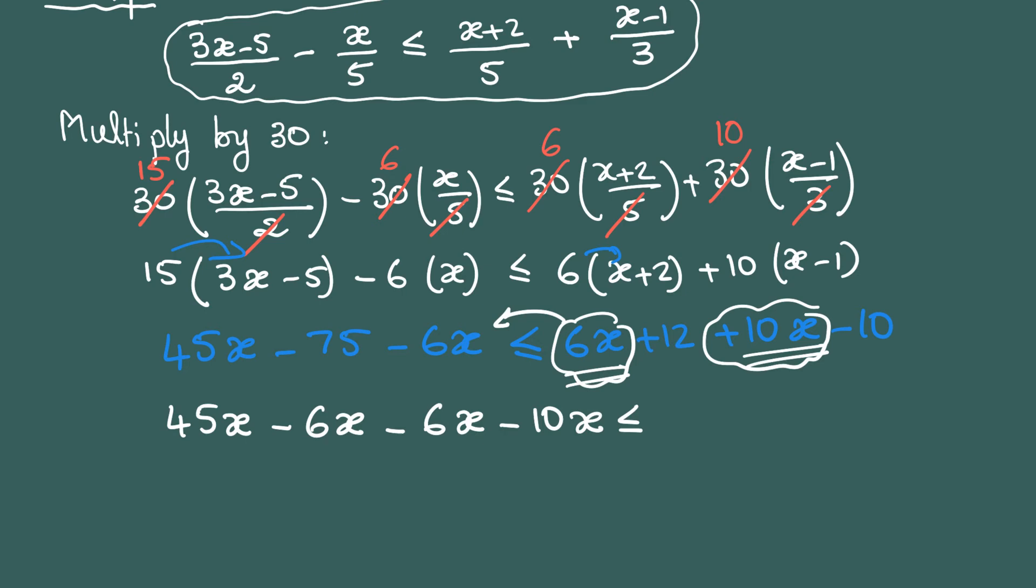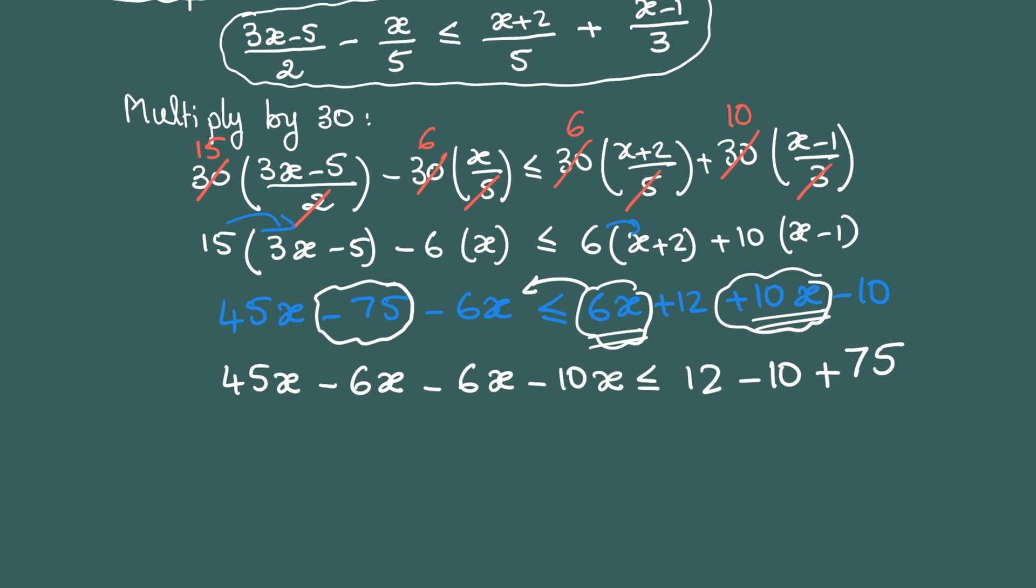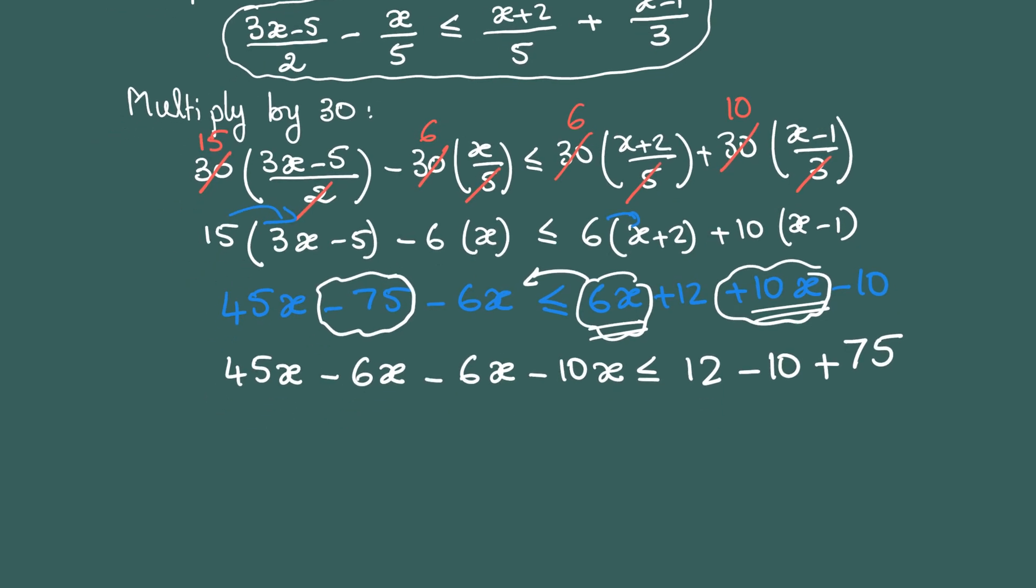I'll do the same thing with the numbers. 12 and -10 are there, they have not moved, but this -75 I need to take to the other side and it will become +75. After that, I simplify all the x's.